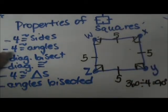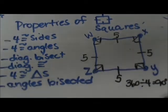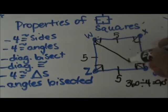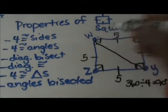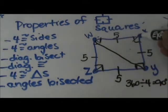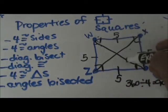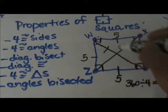Also the diagonals. There are a couple properties of diagonals. The first one is the diagonals bisect each other. If we draw in W to Y and X to Z, we know that these segments are all congruent to each other.